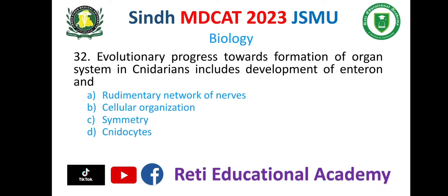Question number 32. Evolutionary progress towards formation of organ system in cnidarians includes development of entron and: A. Rudimentary network of nerves, B. Cellular organization, C. Symmetry, D. Cnidocytes. The correct option is C. Symmetry.